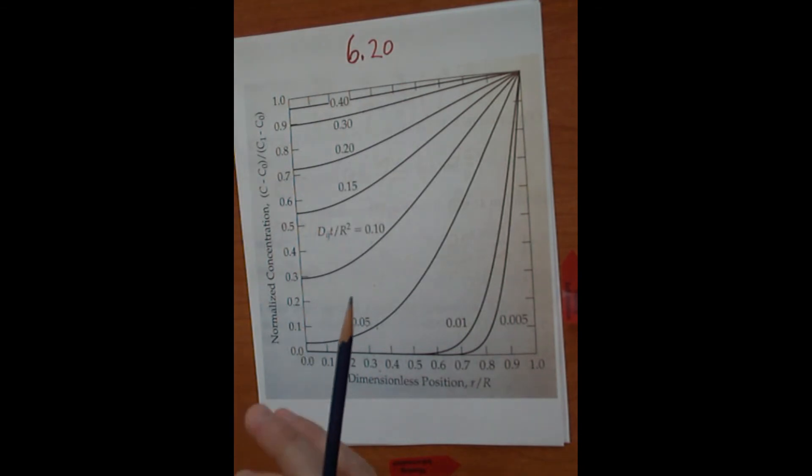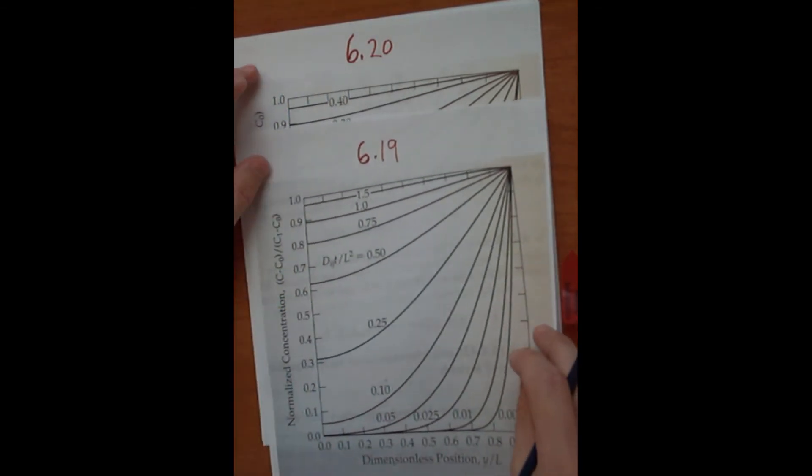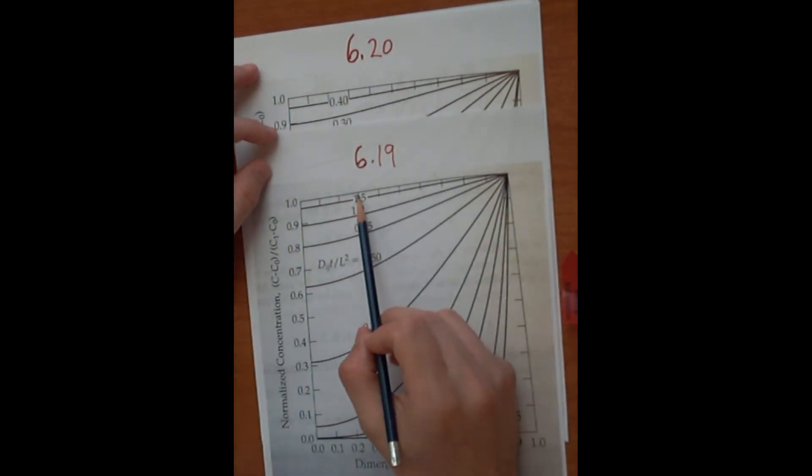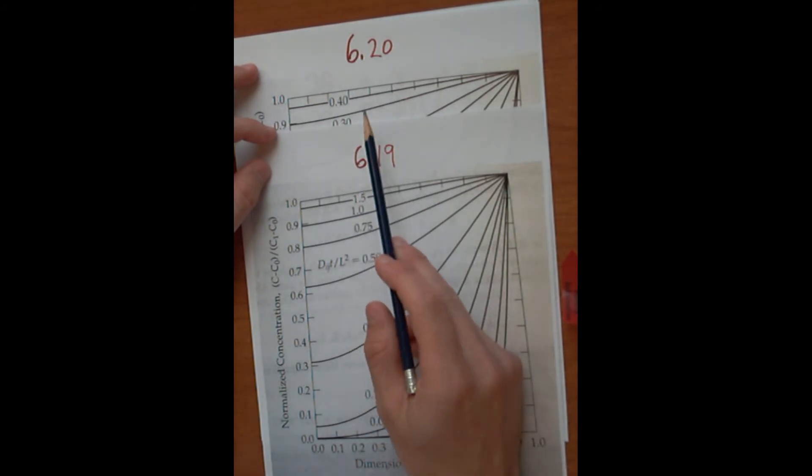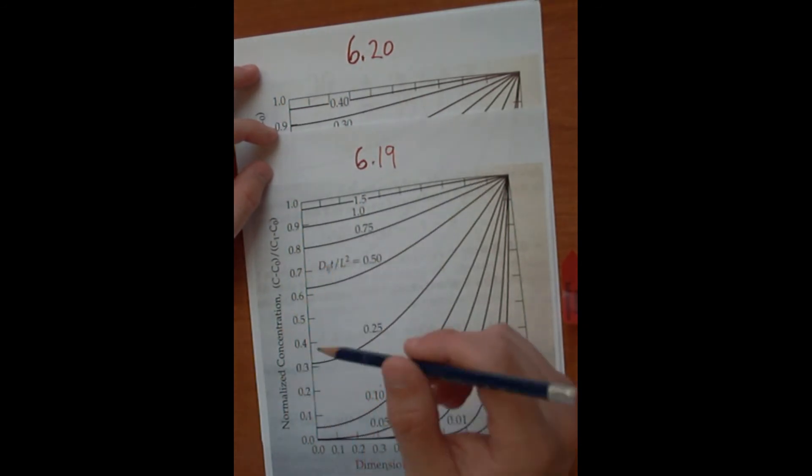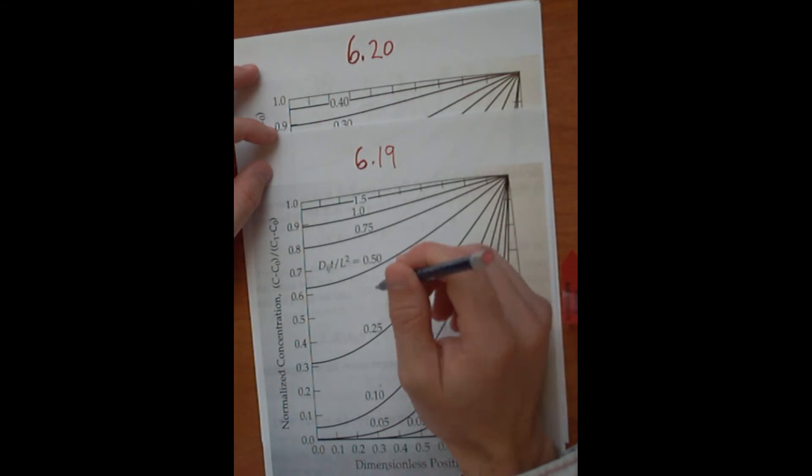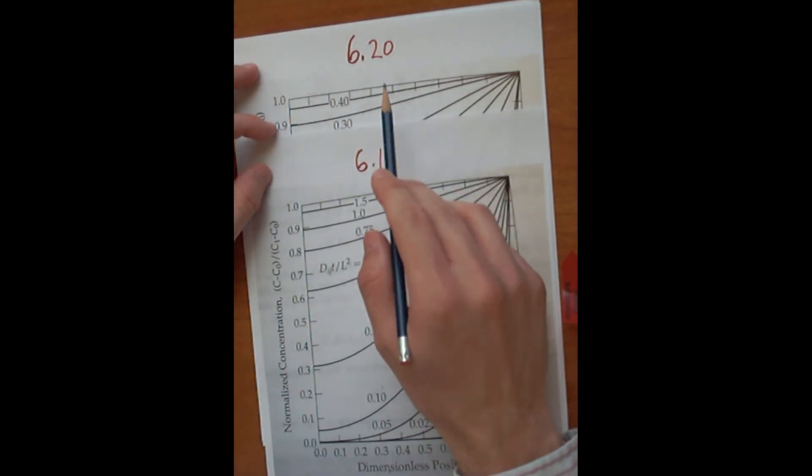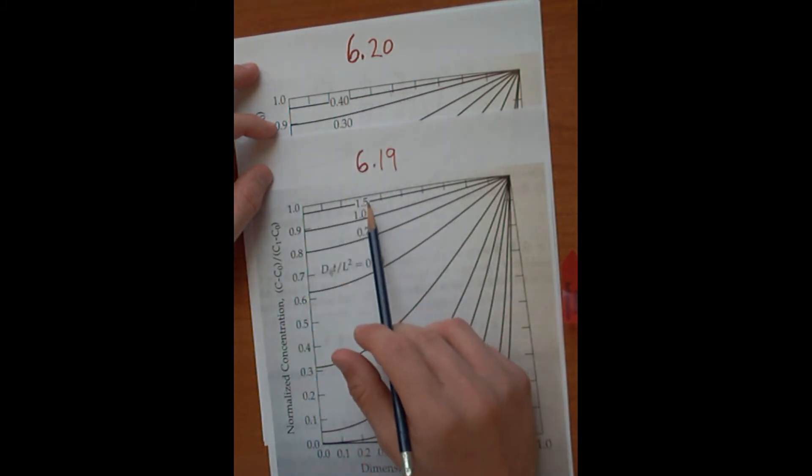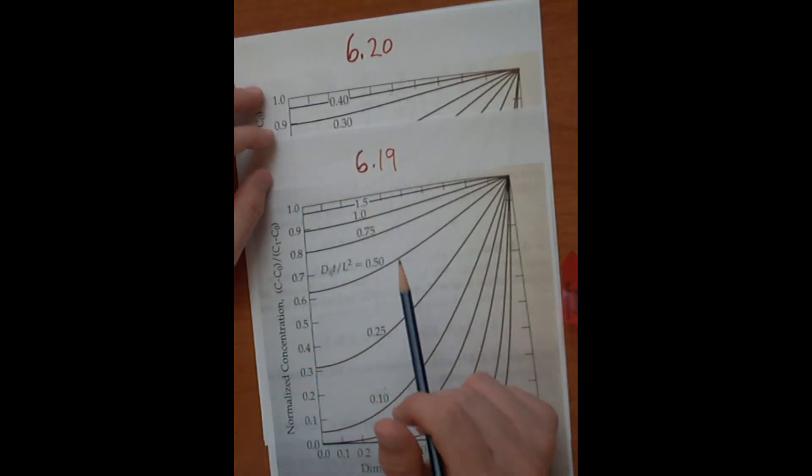And if we compare it to Figure 6.19 for the slab, you can see that, remember, that one was going to be tau is equal to 2. So the non-dimensionalized time that it takes to get to steady state in the sphere is going to be much shorter than in the slab, and that's due to the geometry.